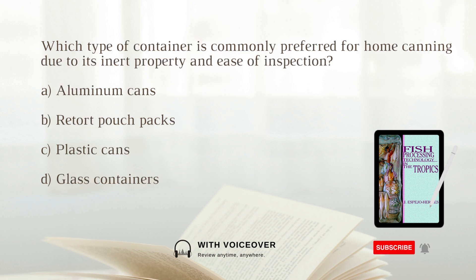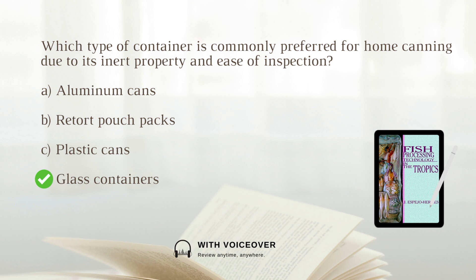Which type of container is commonly preferred for home canning due to its inert property and ease of inspection? A. Aluminum cans. B. Retort pouch packs. C. Plastic cans. D. Glass containers. Answer: D. Glass containers. Glass containers are often preferred for home canning due to their inert property and ease of inspection.